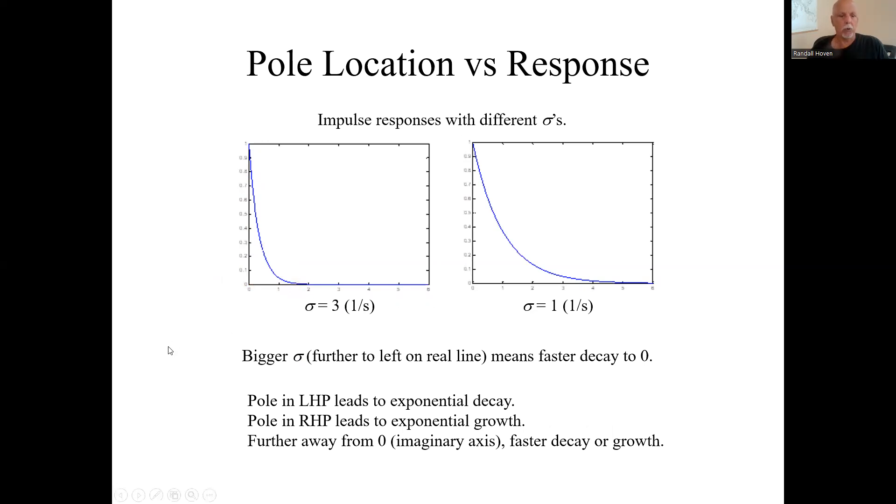Poles in the left half plane lead to exponential decay of the impulse response. In the right half plane, it leads to exponential growth. Further away from the imaginary axis, the faster it either decays or grows.